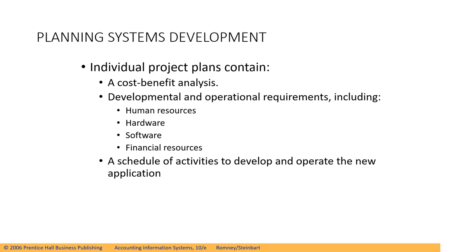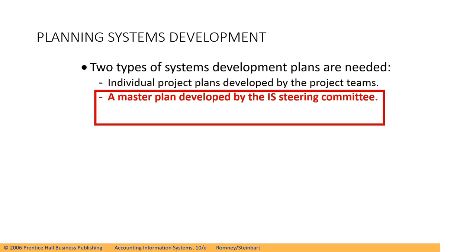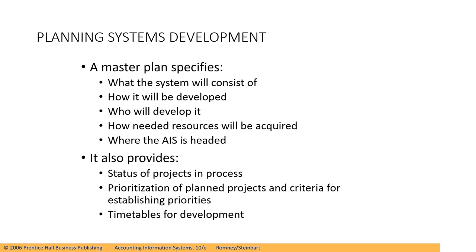The individual project plan contains a cost-benefit analysis, developmental and operational requirements including human resources, hardware, software, and financial resources, and also a schedule of activities to develop and operate the new application. The second type is a master plan, developed by the Information Systems Steering Committee. A master plan specifies what the system will consist of, how it will be developed, who will develop it, how needed resources will be acquired, and where the AIS is headed. It also provides the status of projects in process, prioritization of planned projects and criteria for establishing priorities, and timetables for development.